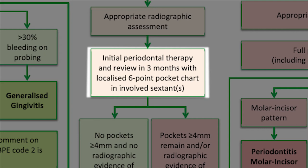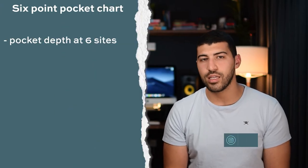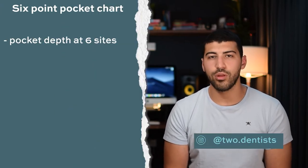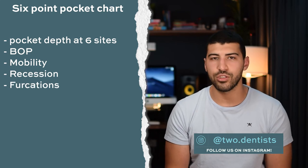Once you have the patient back after eight to twelve weeks, the guidelines say to do a six-point pocket chart in the involved sextants. We think it's best to just redo a BPE, and if they score a three, then carry out a six-point pocket chart in the involved sextants. The six-point pocket chart will record pocket depths at six sites on each tooth, bleeding on probing, mobility, recession, and furcations.